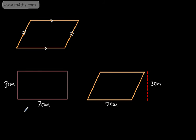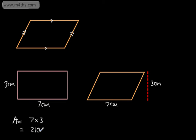The area of a rectangle is given as length times width, or base times perpendicular height. So this would be three times seven, which gives us twenty-one, and the units are centimeters squared. Whenever you're working out an area, your answer will be in something squared — for example, millimeters squared, meters squared, kilometers squared, or just units squared.